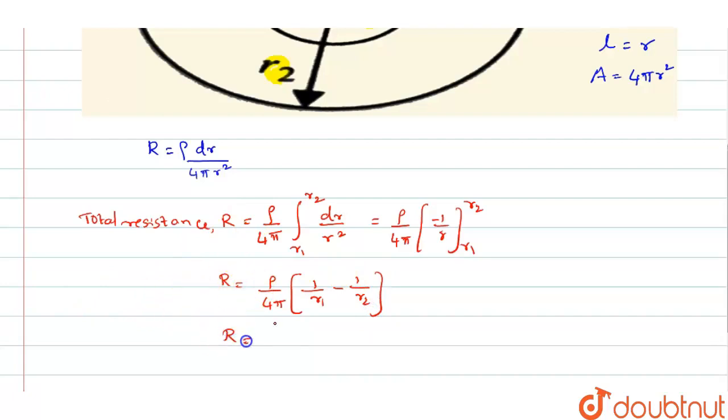We shall take the LCM, we shall simplify it. You will get it as R2 minus R1 divided by R1 R2 into rho by 4 pi, gives you the resistance between the inner and outer element.